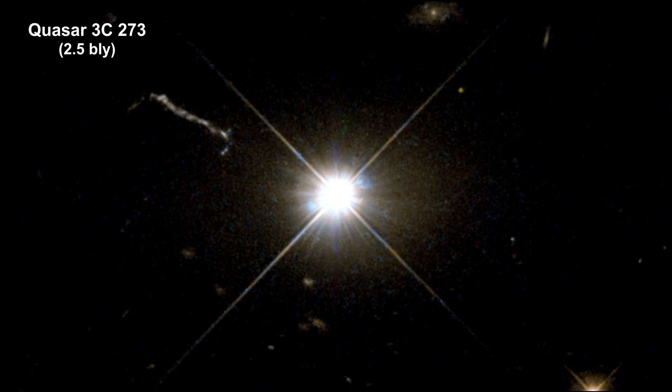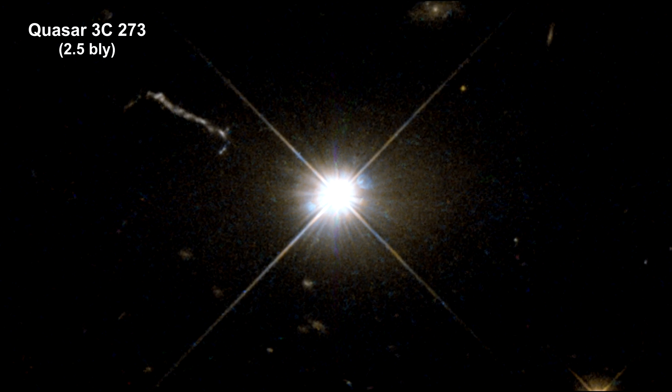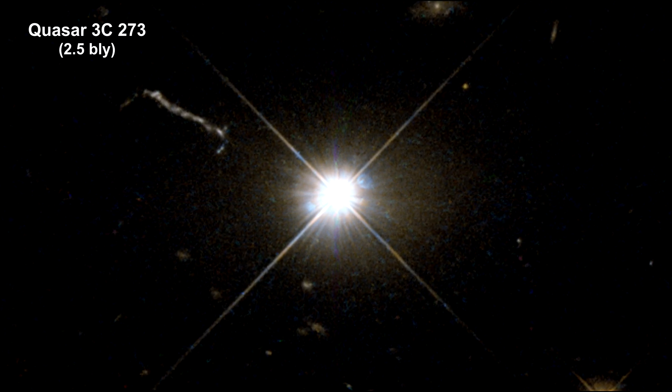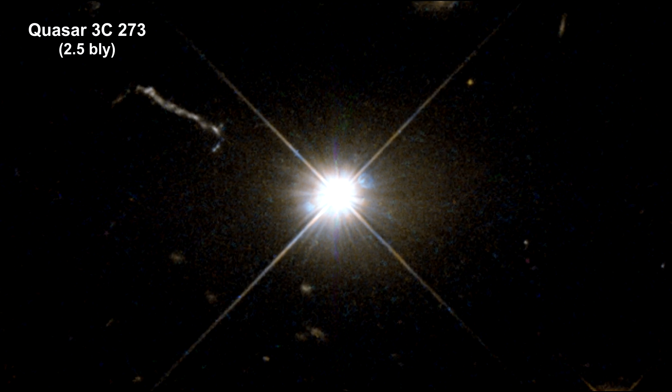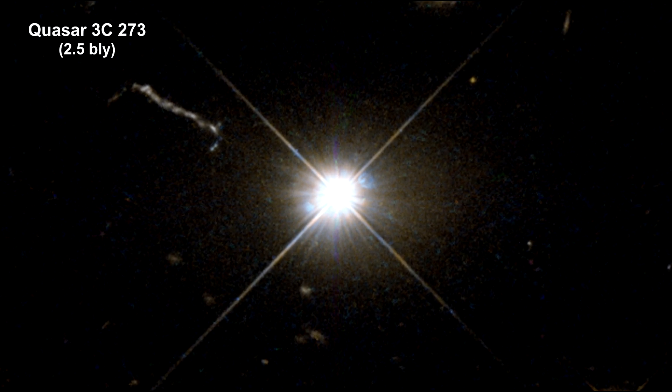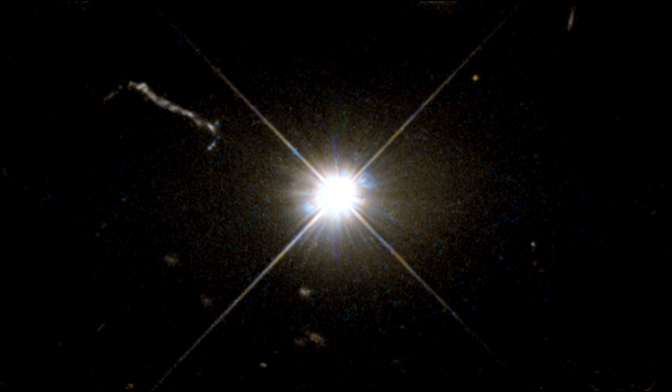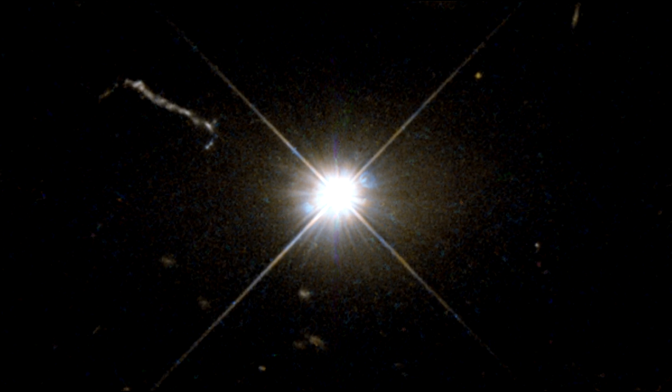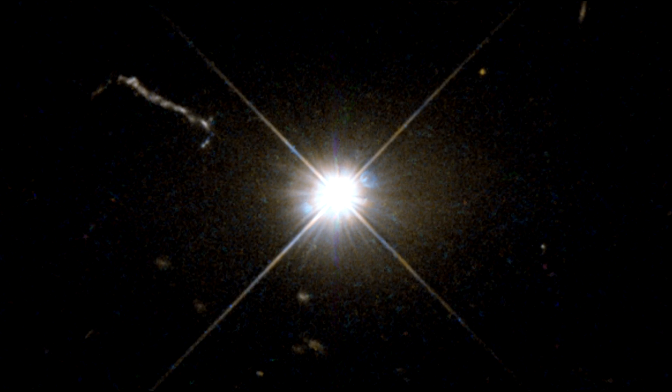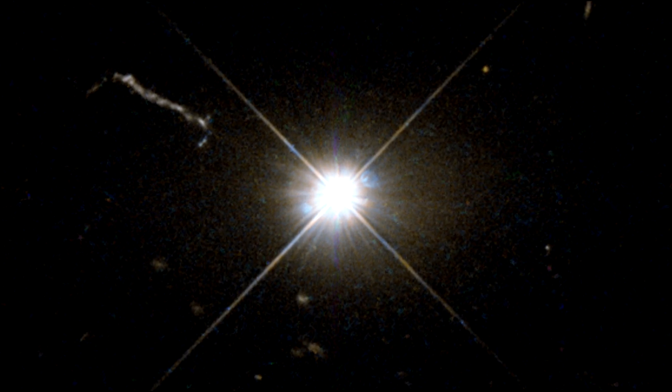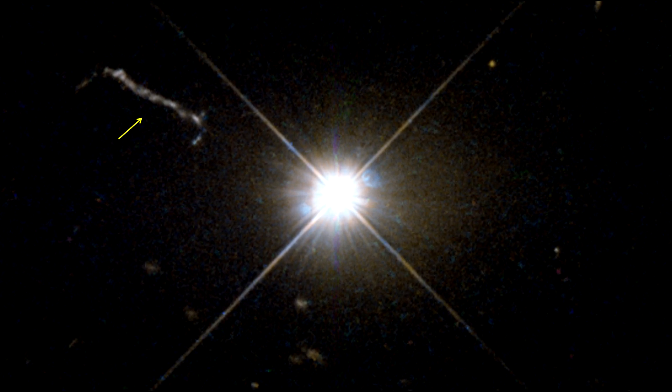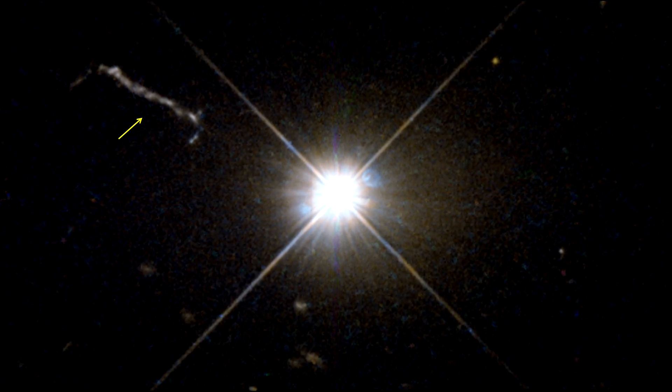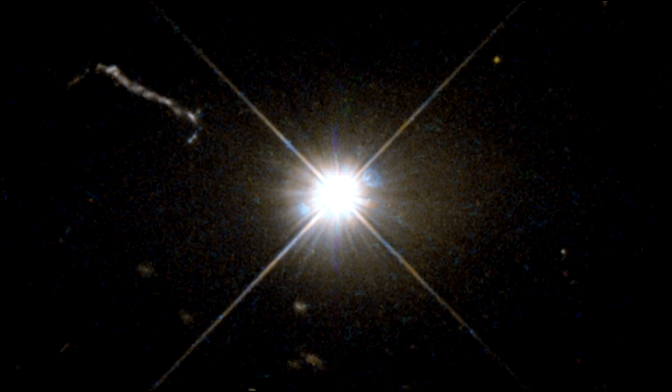Quasars are the intensely powerful centers of distant, active galaxies, powered by a huge disk of particles surrounding a supermassive black hole. As matter from the disk falls inward, some quasars, including this one, have been observed to fire off superfast jets into the surrounding space. In this picture, one of these jets appears as a dusty streak measuring some 200,000 light-years in length.